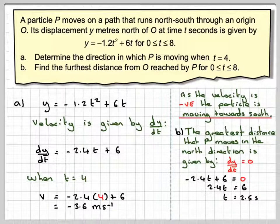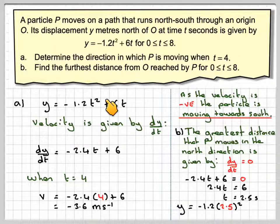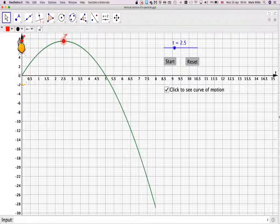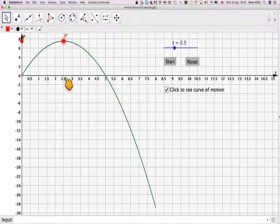So we now take that value of t and put it in our distance. So y would be -1.2 × 2.5² plus 6 × 2.5. And we'll calculate that, so we're going to get 7.5 metres. So the distance moved in this direction is going to be 7.5 metres. It happens when t is 2.5.